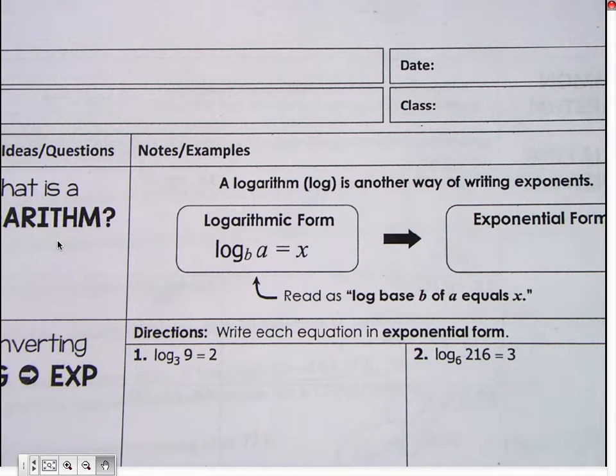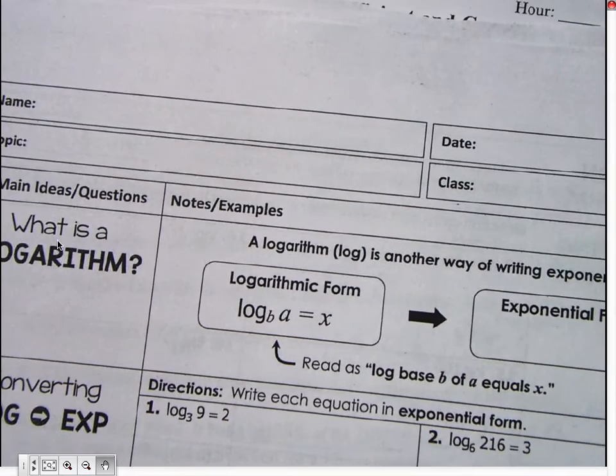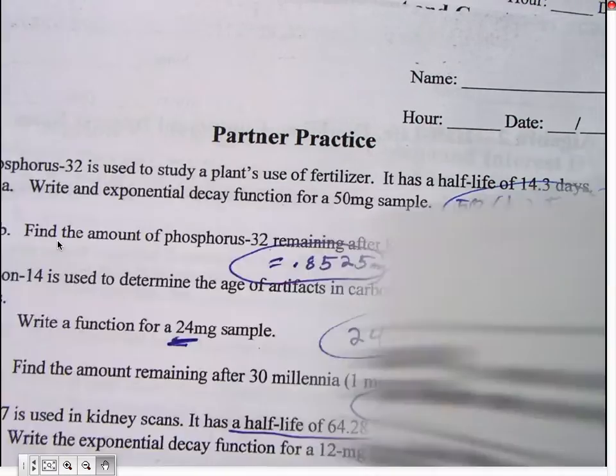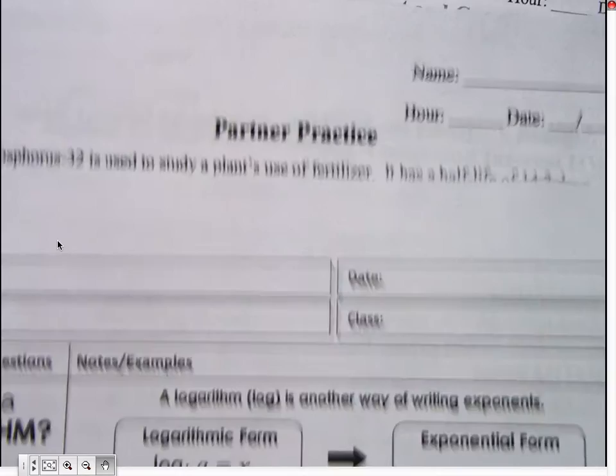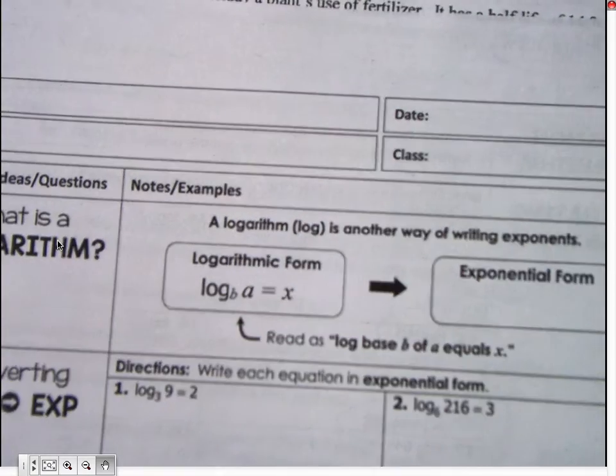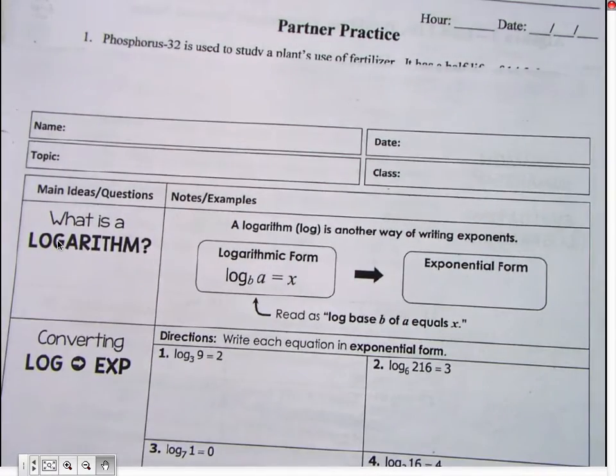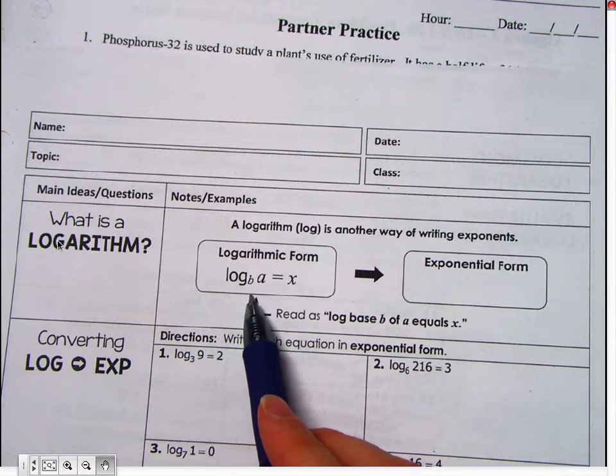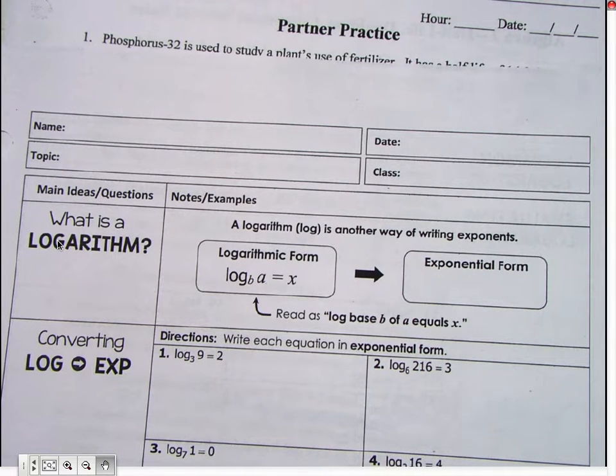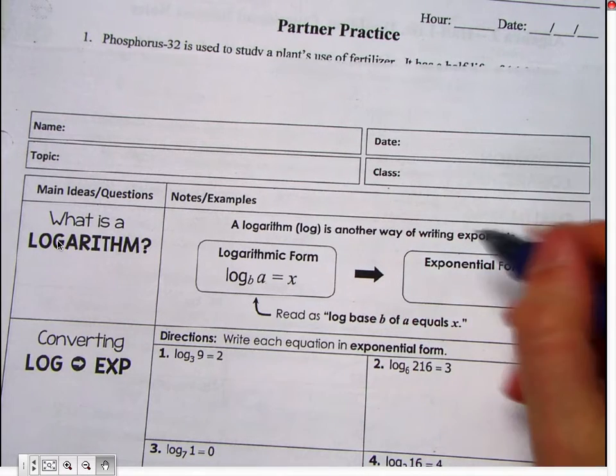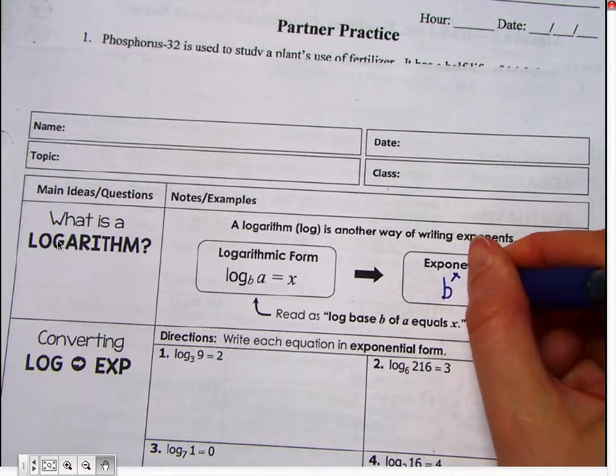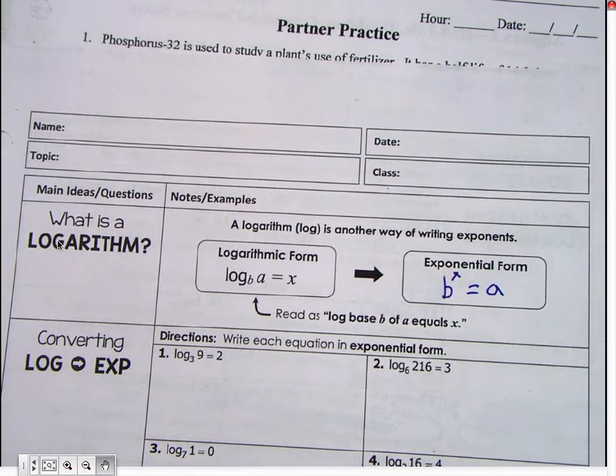To go from logs to exponentials, exponentials to logs, we're going to evaluate some logarithms and we're going to do some change of base formula. Okay, so the first thing we're looking at is this top part right here. I'm going to zoom out. We have log base B of A equals X. Exponentially, we are going to do base B to the exponent X equals A. So we need to go back and forth between them.